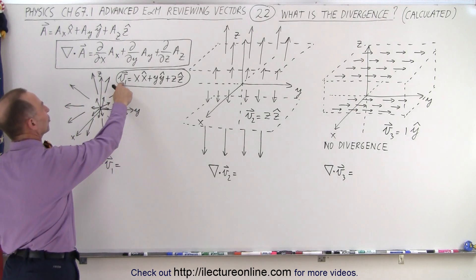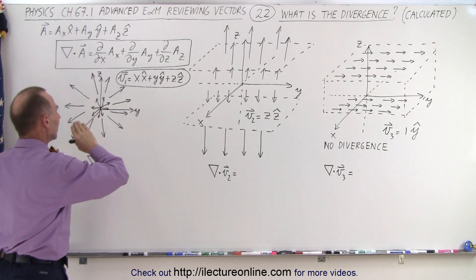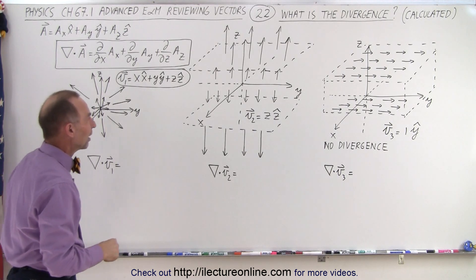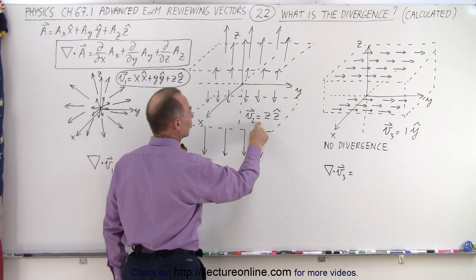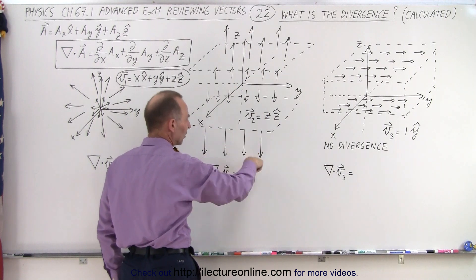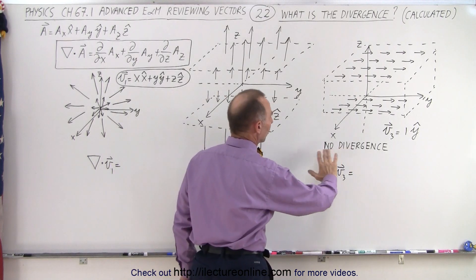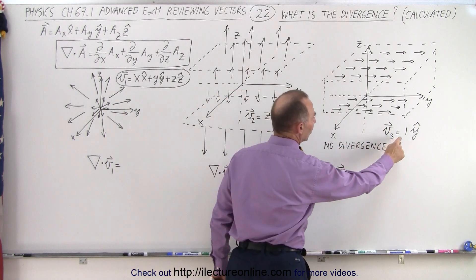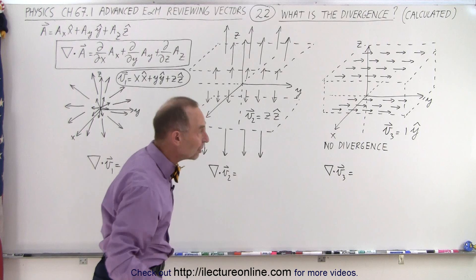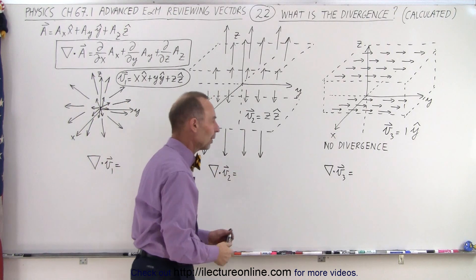Our first vector function is defined as x in the x direction, y in the y direction, plus z in the z direction — it increases in all directions x, y, and z. Our second example shows a vector function that increases in the z direction, in the positive or negative direction; notice in the negative direction we get a negative number. And our third example has no divergence because it is a constant vector function: 1 in the y direction, so the vector doesn't change as we travel in any direction x, y, or z.